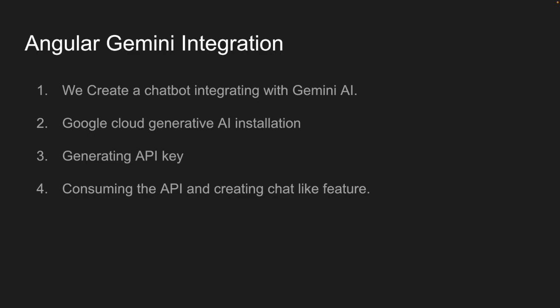Let me go through this step by step. First, you need an NPM installation for Generative AI. We will be generating an API key using your Google account — that is the Google API key for Gemini. Then we will be consuming the API and create a chat-like feature with Gemini. I'll jump into Visual Studio Code where I have created some prerequisites, and on top of that we will do all the chatbot integration.